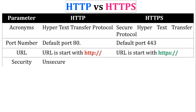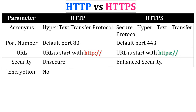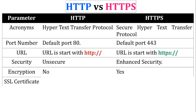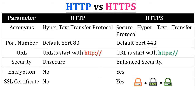Regarding security, HTTP does not provide security and is unsecure, while HTTPS provides security through data confidentiality and data integrity. For encryption, HTTP does not support encryption and no security algorithm is used, whereas HTTPS supports encryption and the encryption algorithm is decided by the client and server during the handshaking process. Regarding SSL certificates, HTTP does not use an SSL certificate, while HTTPS includes an SSL certificate on the server side. In summary: HTTP + SSL certificate = HTTPS.